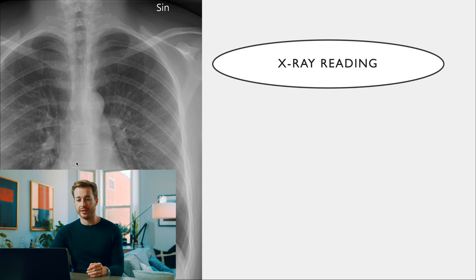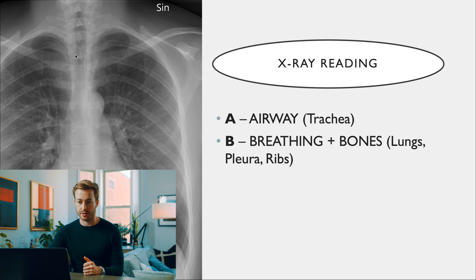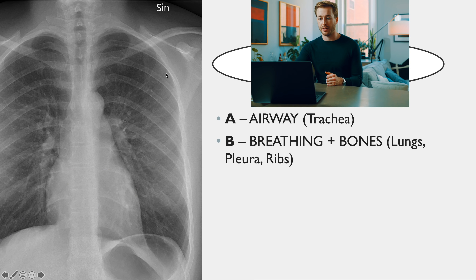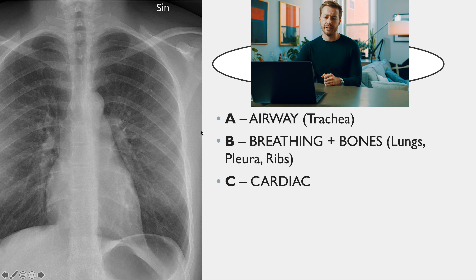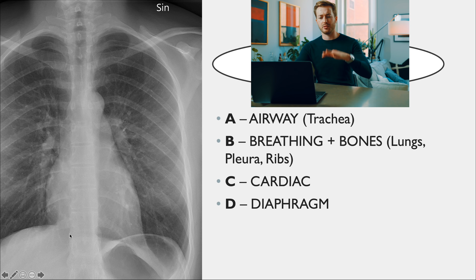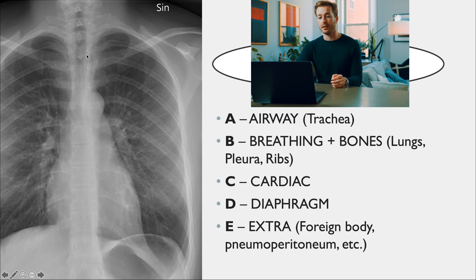The next mnemonic is ABCDE for reading a chest X-ray. A is airway — is the trachea normal? B is breathing and bones — do the lungs extend to the edges, and are there rib or clavicle fractures? Lack of lung markings at the edge could suggest pneumothorax. C is cardiac — check the heart size and borders. D is diaphragm — is it flat or blurry, suggesting effusion? E is extra — look for foreign bodies (children often inhale objects into the right main bronchus) or pneumoperitoneum.